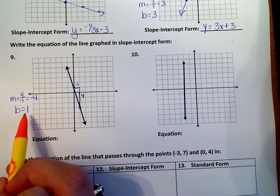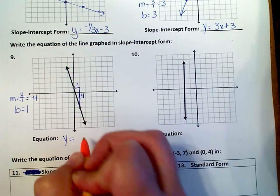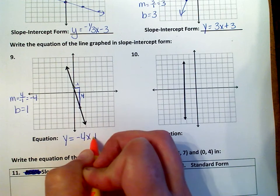So that's your m, and that's your b. So y equals negative 4x plus 1.